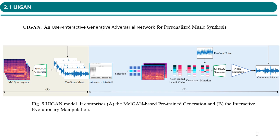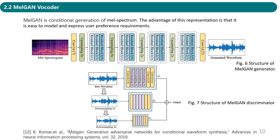The user-guided vector is conducted through interactive evolutionary manipulation as input to the MIR-GAN generator to synthesize candidate music. The interactive evolutionary manipulation includes interactive selection, crossover, and mutation. This loop continues until the music that satisfies the user preference is synthesized. MIR-GAN is an essential conditional generation of MIR spectrogram. The advantage of this representation is that it is easy to model and can better express the user preference in music synthesis.